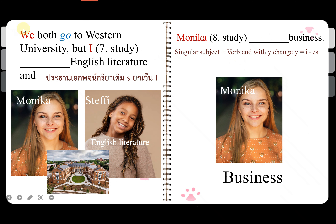We both go to Western University. But I — Sardi — don't change anything with the verb. So Sardi studies English literature. And Monika is singular, so a verb ending in Y changes: drop Y, add I-E-S. Monika studies business.